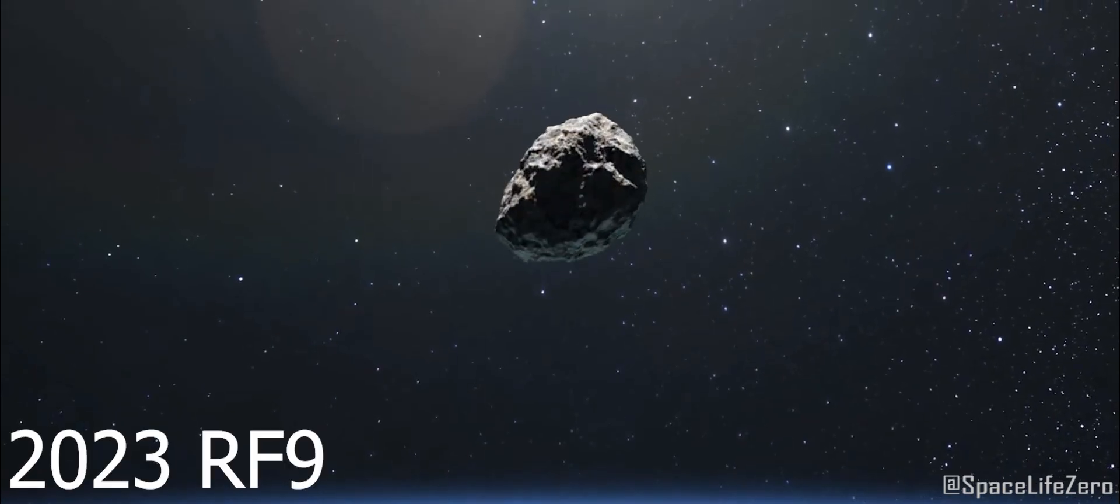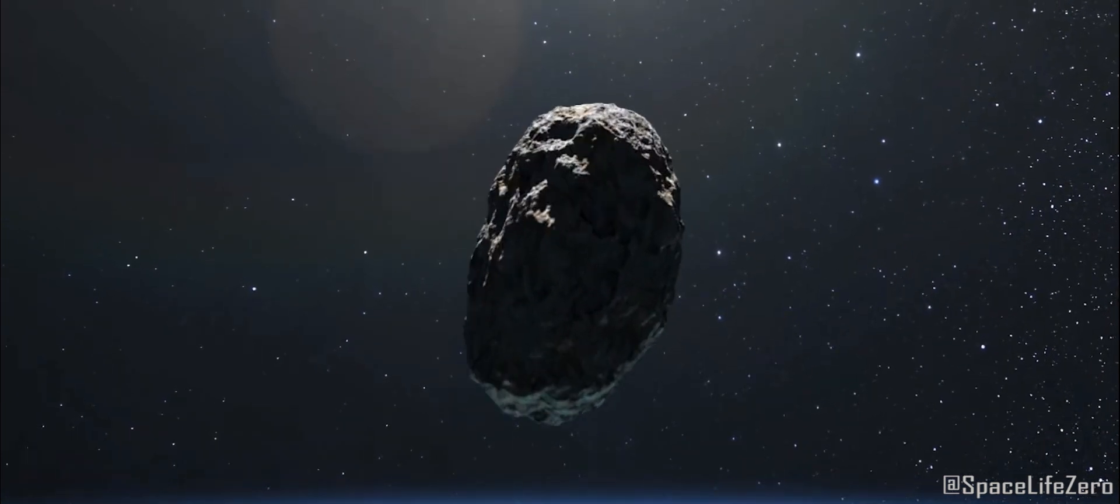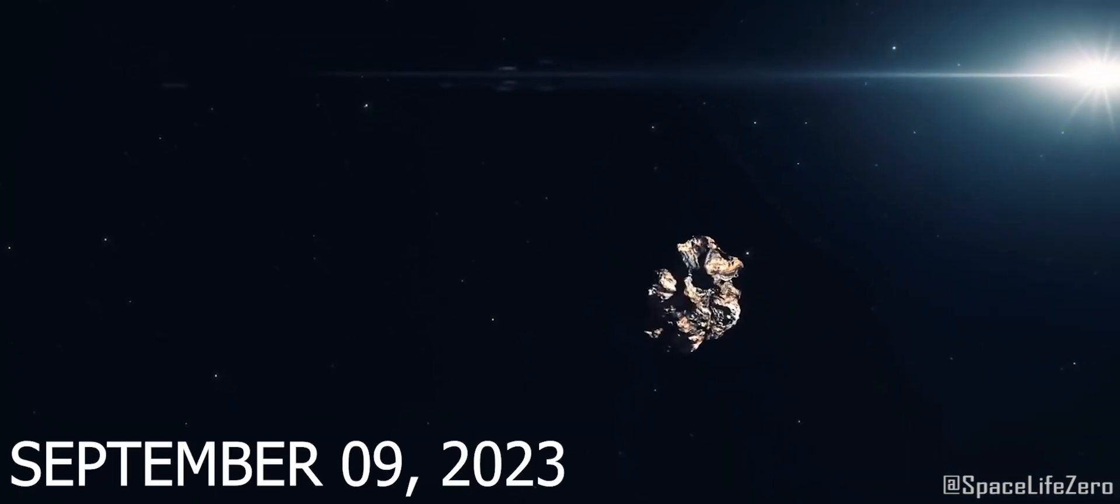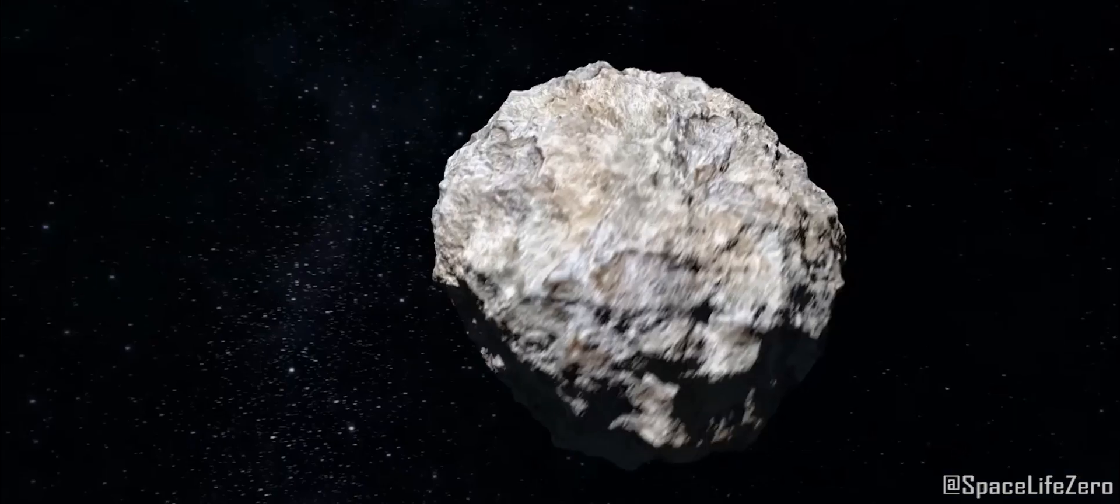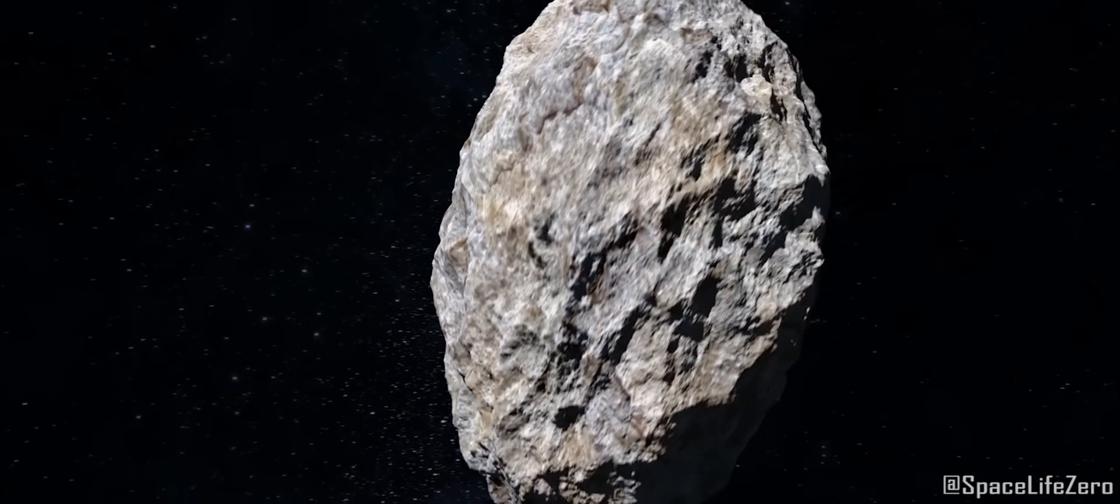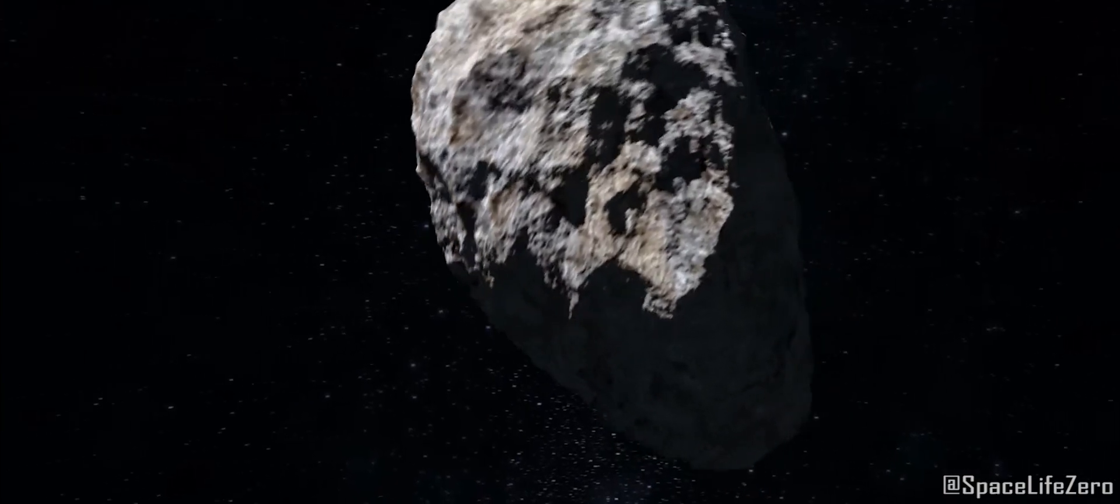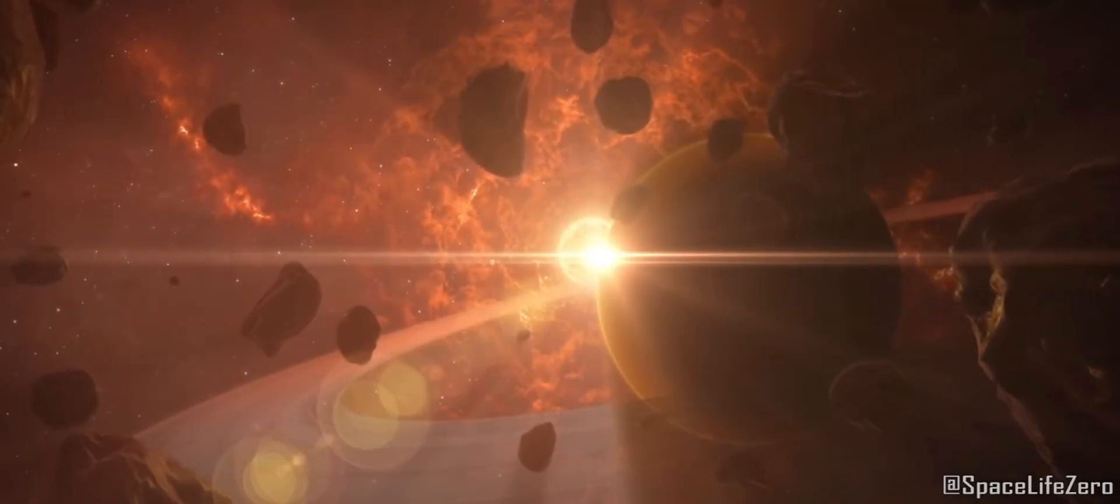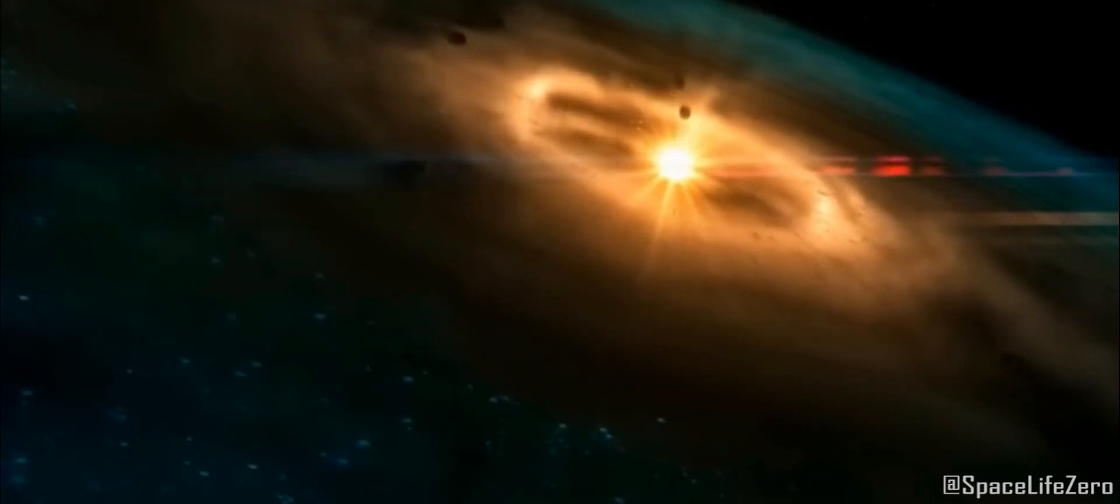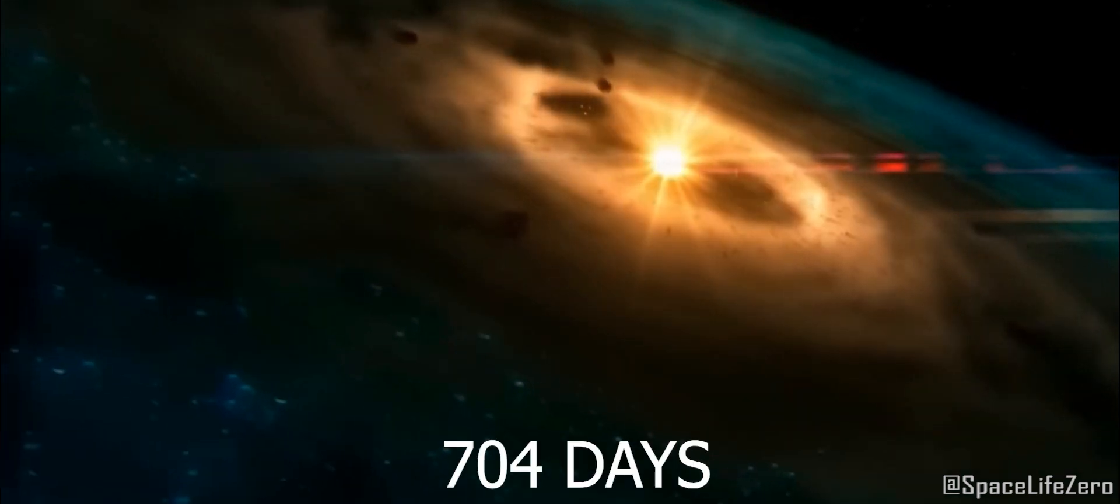Asteroid 2023 RF9: This asteroid was first discovered on September 9, 2023, and has the size estimated in the range from 19 to 43 meters. This space rock belongs to the Apollo Group, and it makes one orbit around the Sun in 704 days.